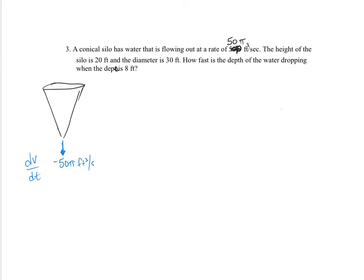The cone is pointed down with water coming out. Our dV/dt is negative 50 pi cubic feet per second. We know the volume formula for a cone is one-third pi r squared h. The diameter is 30, so the radius is 15, and the full height is 20.